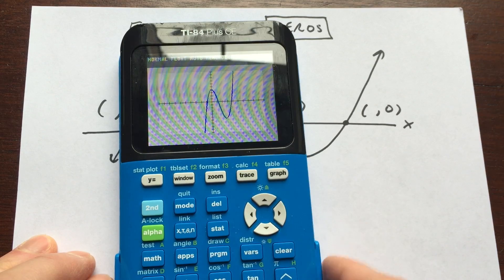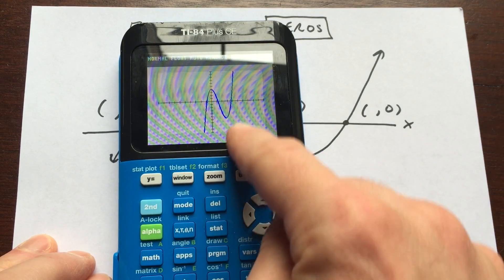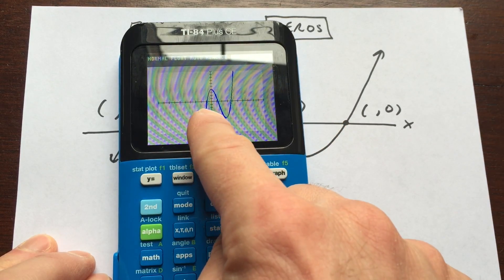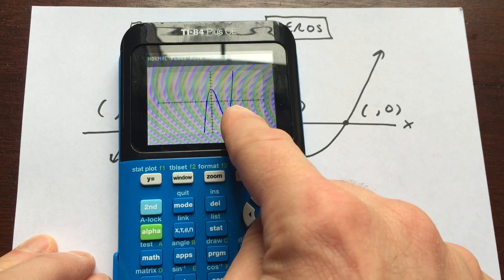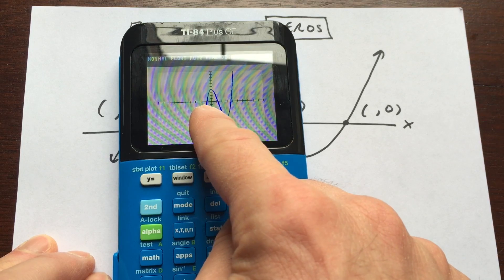Go over to graph, and there's the graph of the function. But what we're interested in is those points where it crosses the x-axis. Those are the zeros. That's where the y-coordinate, the y-value is zero.